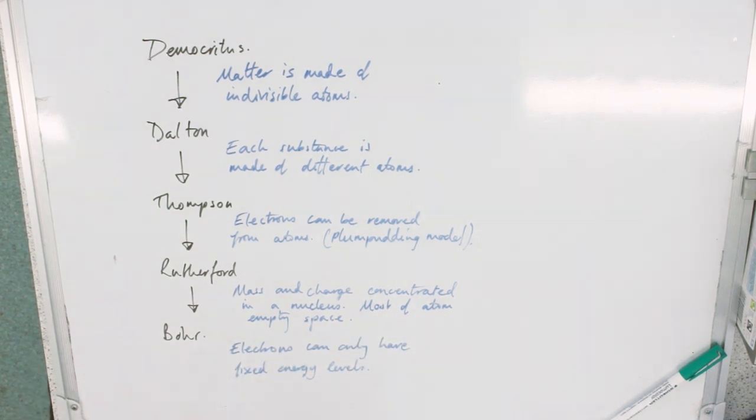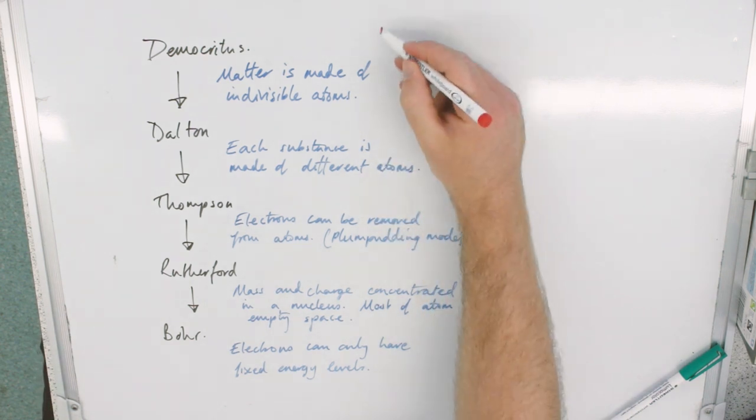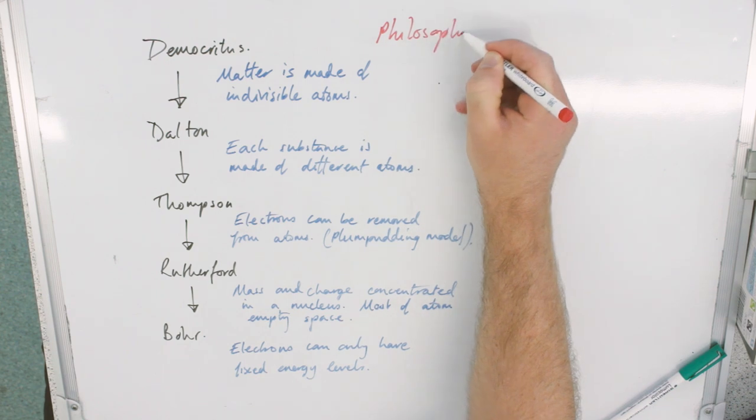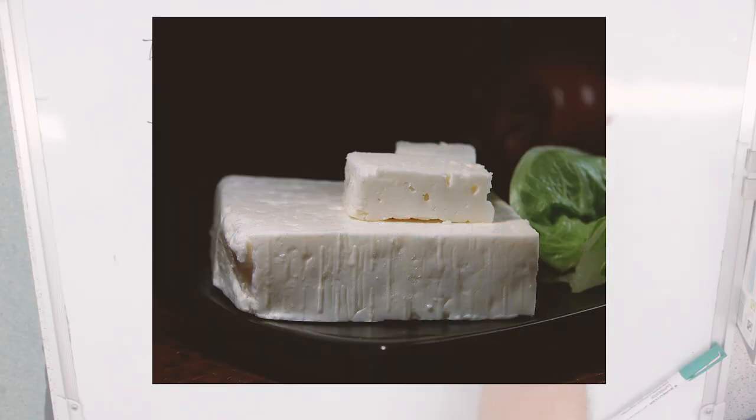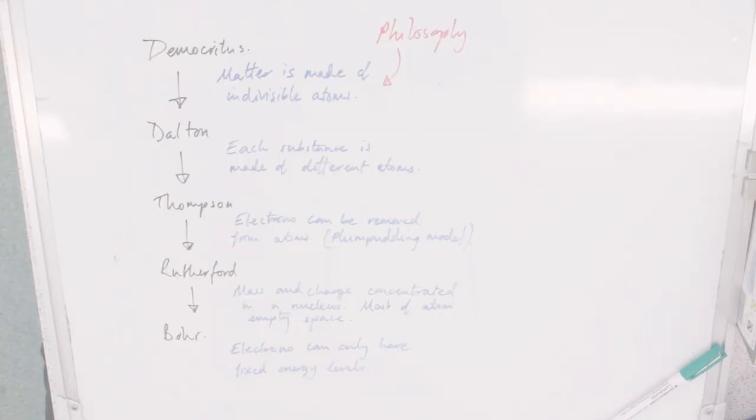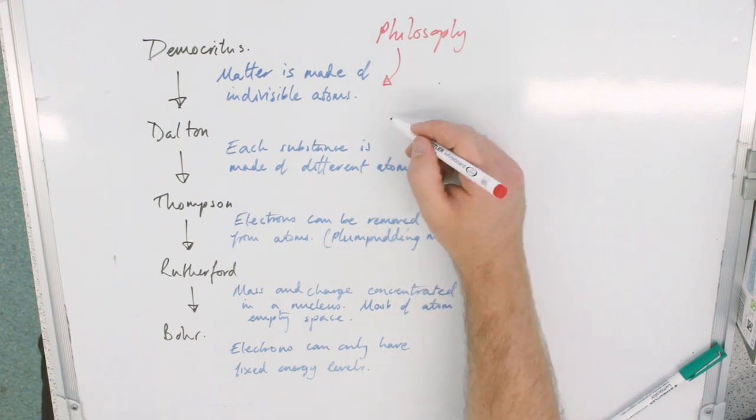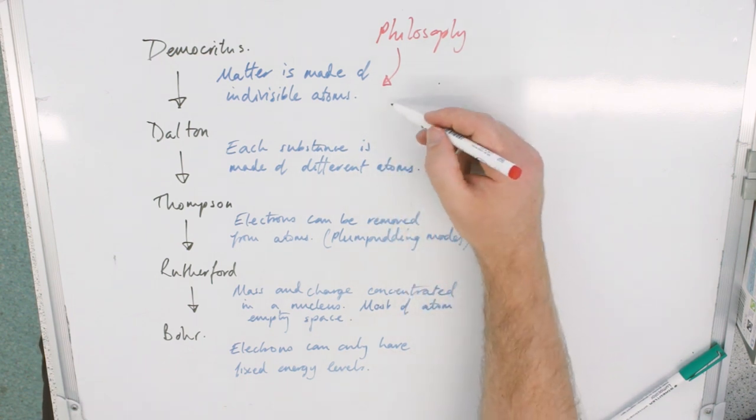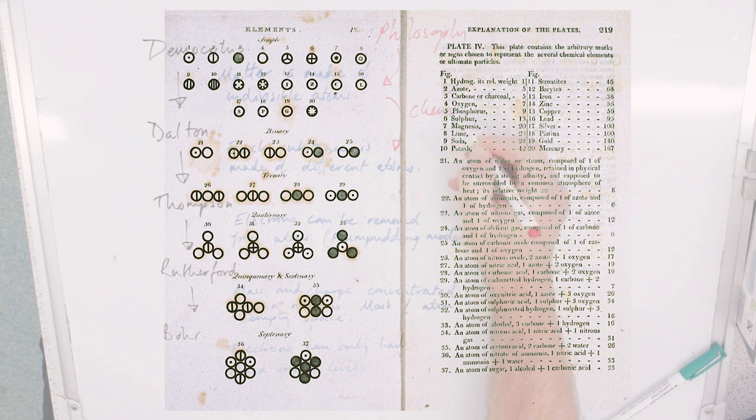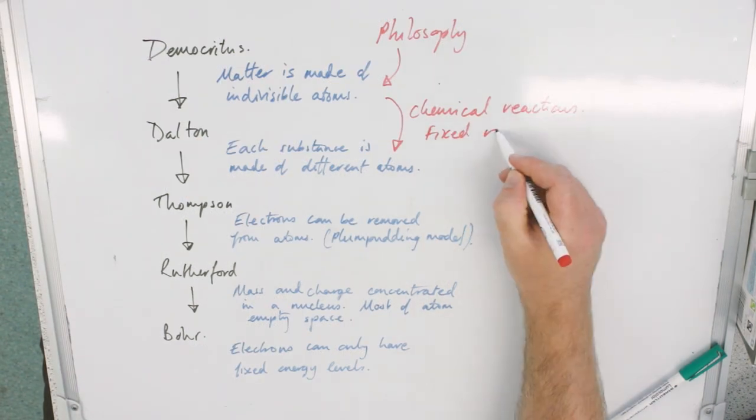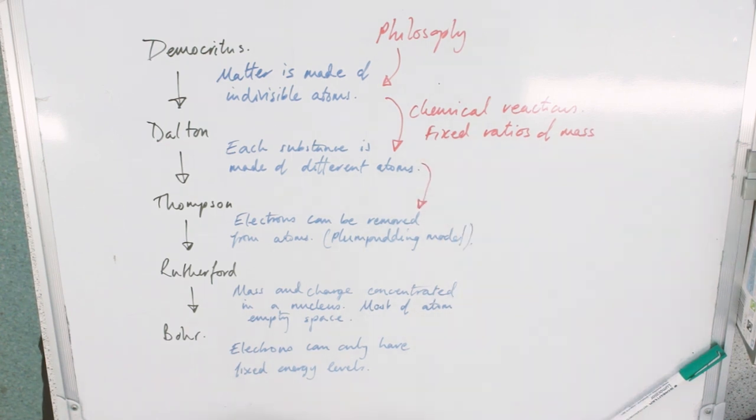So where did these ideas come from and how and why did they change? Well, this was really from philosophy. So the idea of cutting up the cheese is a thought experiment, it's just a piece of thinking. This was actually from chemical reactions and the idea of conservation of mass, and these kind of fixed ratios of mass.